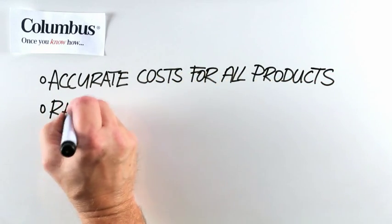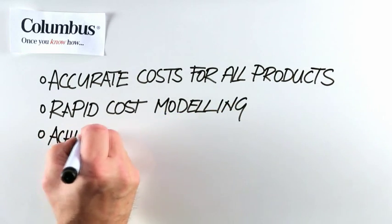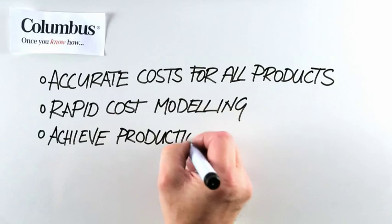They can also quickly and easily model the impact of cost changes on their profitability. The coordination of co-products supply and demand helps them achieve their production goals.